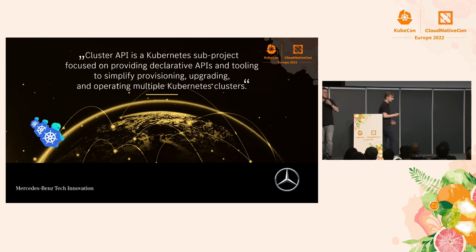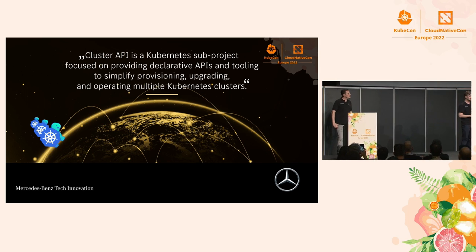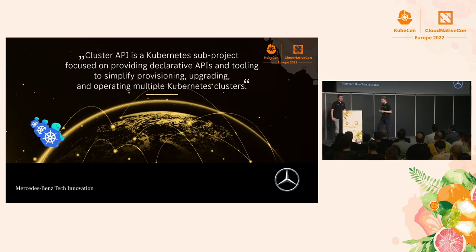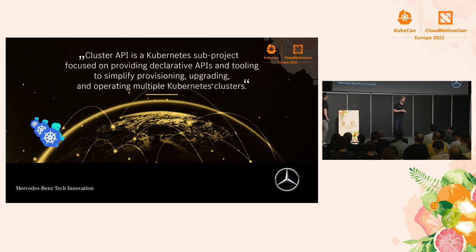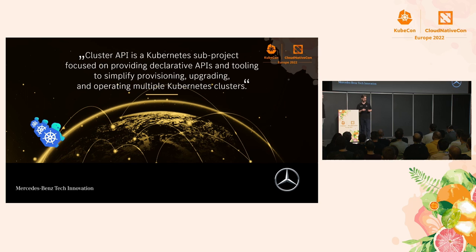Cluster API provides essential cluster management for the complete lifecycle of a cluster — this includes creating, deleting, updating to a new Kubernetes version, and scaling by adding additional nodes. Cluster API is maintained by the Kubernetes special interest group for cluster lifecycle, and it works with multiple cloud providers such as AWS, Google, Azure, OpenStack, and many more. There's actually a separate talk teaching how to create your own cloud provider plugin for Cluster API.